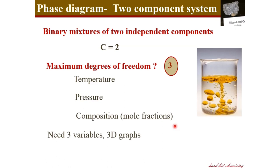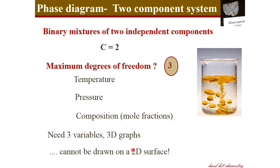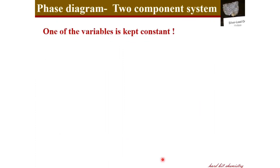In the phase diagram you will have three variables, meaning you need to use all three axes — x, y, and z — resulting in a three-dimensional graph. Since we have a two-dimensional surface on paper, it is not easy to visualize a three-dimensional graph, so we limit or reduce the system by keeping one of the variables constant.